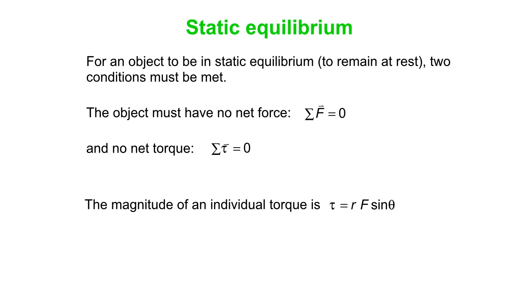So for an object to be in static equilibrium, in other words for it to remain at rest, two conditions must be met. The object must have no net force. The sum of all the forces equals zero. We're very familiar with that concept. And it must also have no net torque. The sum of all the torques on the object must also be zero. And don't forget that the magnitude of an individual torque we can calculate from the equation tau is RF sine theta.